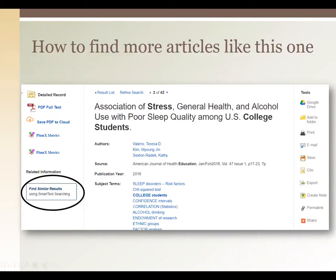If you want to find more articles similar to that one perfect article you found, you can click the 'Find Similar Results' button and Swoop will take all the information about that article and build you a new search based on it. Note that when it does that search, it will erase all your limiters, so you'll have to go through the same steps again — check off full text, change the years, and narrow down your results.